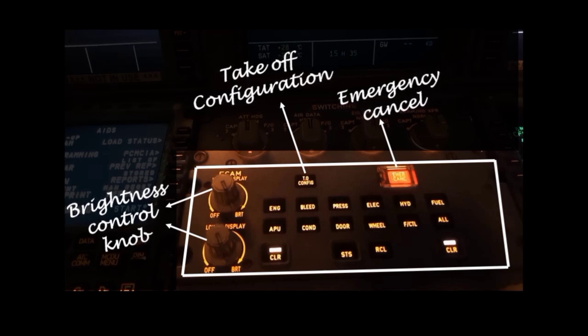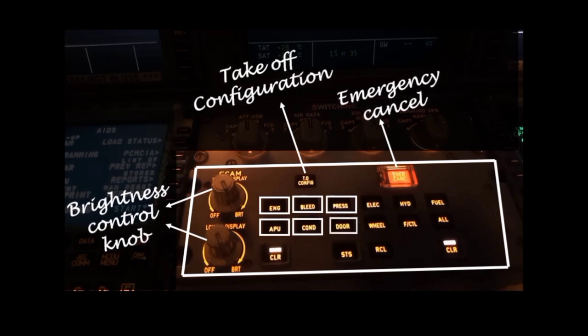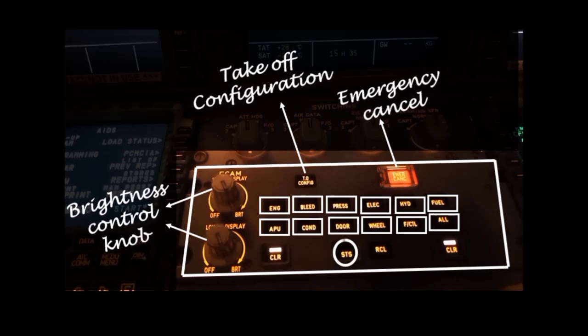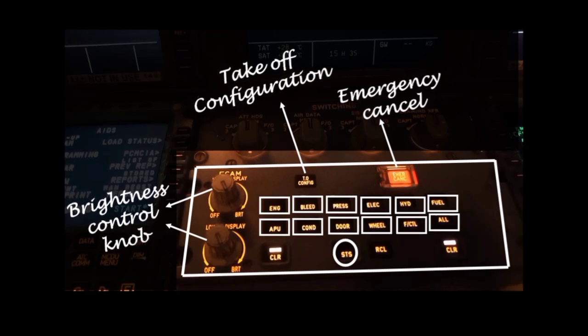There are 12 different buttons used to select and display various information in the lower display unit, which we will talk about later. This is the status key, which illuminates when the ECAM status page is displayed. When pushed, the status page is displayed on the lower ECAM screen. If no status message is present, 'normal' appears on the screen for 5 seconds.